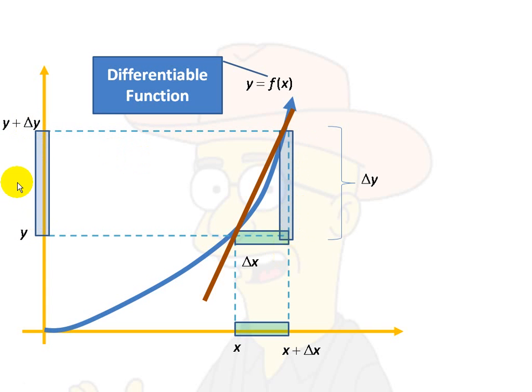And just making some observations here. Notice that another way to look at delta y would be f of x plus delta x, which is this point, minus f of x. That is delta y, just using a different notation than one I have over here. But that is delta y. Now, that being the case, delta y over delta x is this.